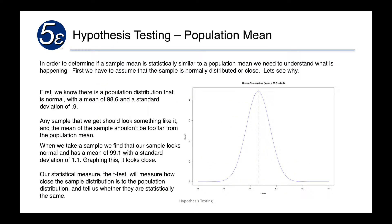In order to determine if a sample mean is statistically similar to a population mean, we need to really understand what's happening. First, we have to assume that the sample is normally distributed or somewhat close. If we know that there's a population distribution that is normal with a mean of 98.6, then any sample that we have should look something like it, and the mean of the sample shouldn't be too far away from the population mean.